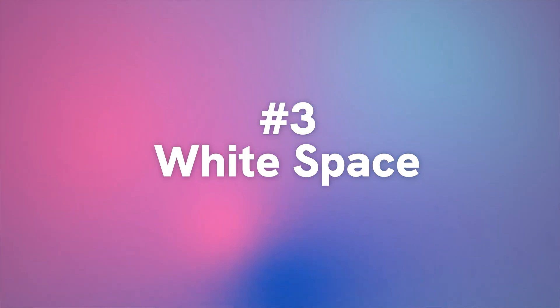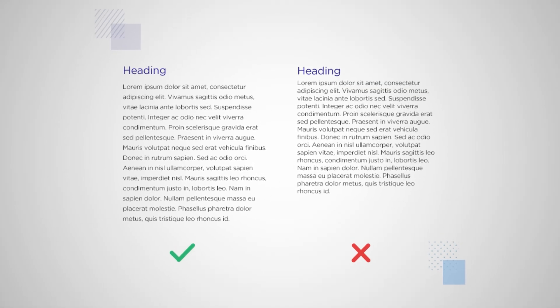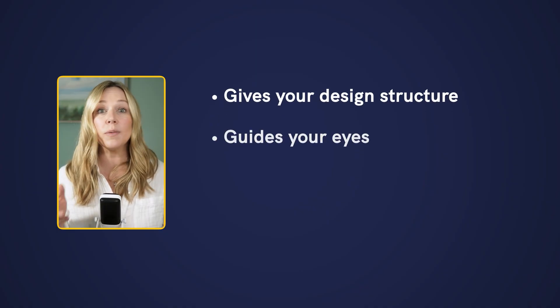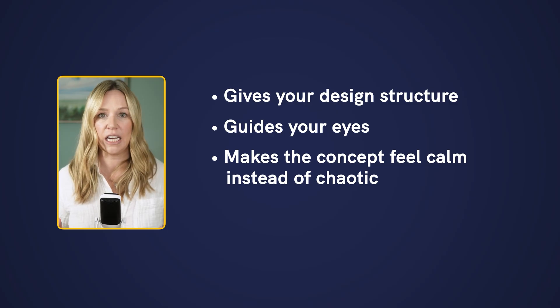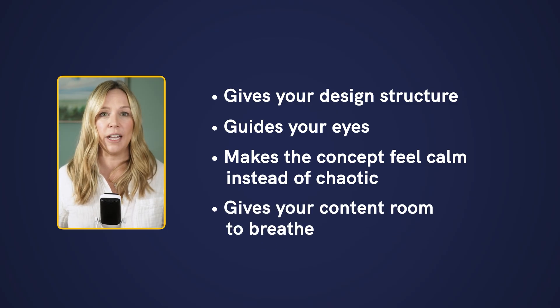Rule number three is white space. White space is simply the space between elements on the page — and it doesn't have to be white, and it isn't wasted. It's what gives your design structure. It helps guide your eye and makes the content feel calm instead of chaotic. It's all about giving your content room to breathe. Sometimes it's a little difficult to get right — it might make you uncomfortable at first because you want to fit all your information on the page, but your information won't be shareable if it's too crowded and people can't follow it.